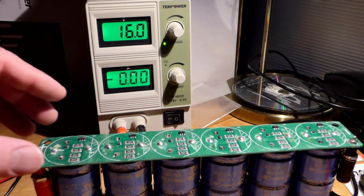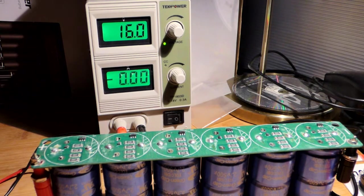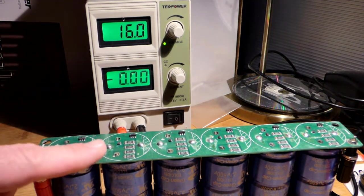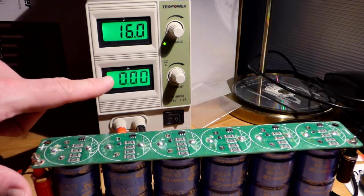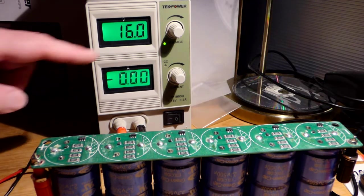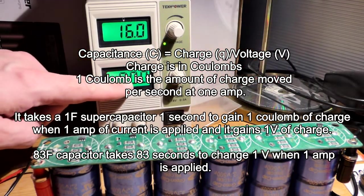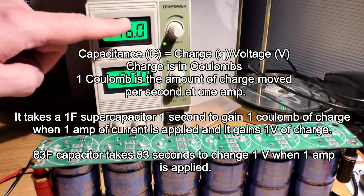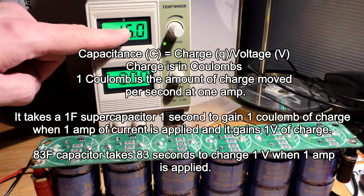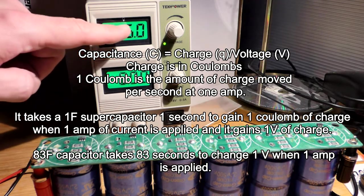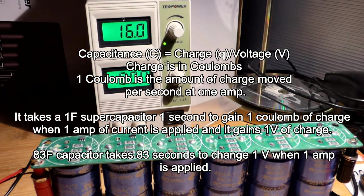Capacitance goes down. We have six 500 farad supercapacitors in series, we're going to get one sixth of the capacitance. So it's going to be about 83. And what that means is, for each amp of current we put from one side to the other, it's going to take about 83 seconds for each volt. About 83 seconds to go from one volt to two volts, and then about 83 seconds to go from two volts to three volts, as long as current stays at one amp.